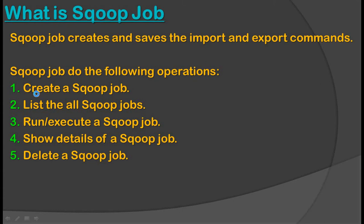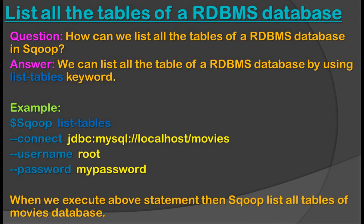Before seeing how to create a Sqoop job, let's see how to list all tables of an RDBMS database in Sqoop. We can list all the tables of an RDBMS database by using the 'list-tables' keyword. As we have seen in an earlier session, using 'list-tables' we can list all the tables of a particular database.